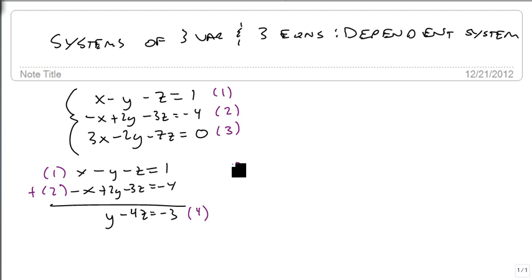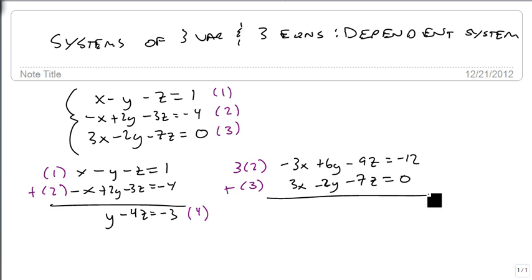If we take 3 times 2 and add that to 3, then we can get rid of the x from 3. 6y minus 9z equals minus 12. 3x minus 2y minus 7z equals 0. We can add these together. We get 4y minus 16z equals minus 12. And this is equation 5.